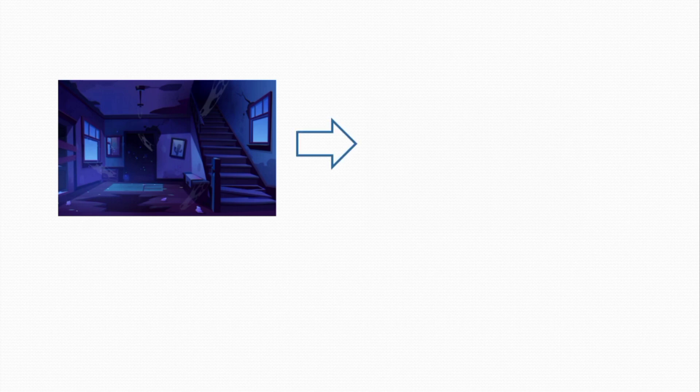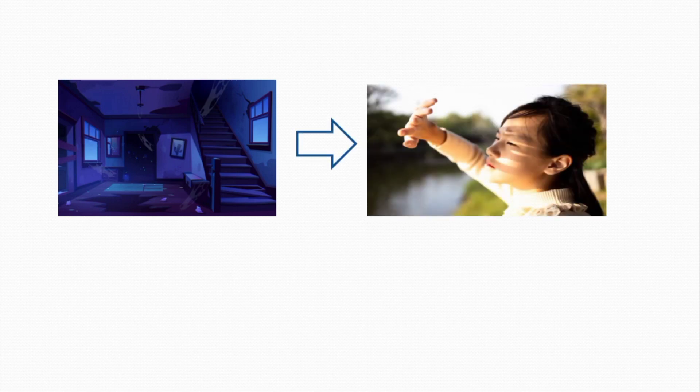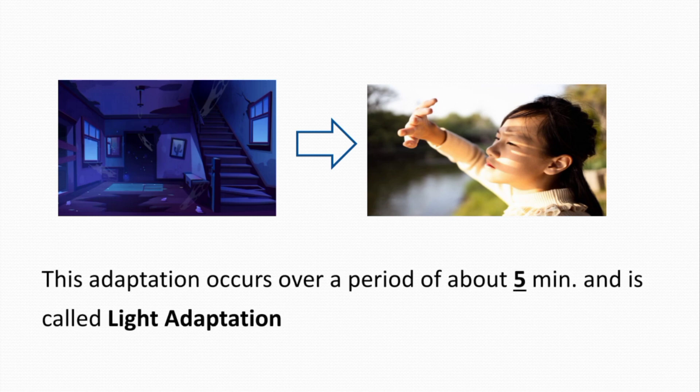On the other hand, when a person passes suddenly from a dark to a brightly lit room or bright environment, then initially the light seems intense and uncomfortably bright until the eyes adapt to the increased illumination. This adaptation occurs over a period of about 5 minutes and is called light adaptation.